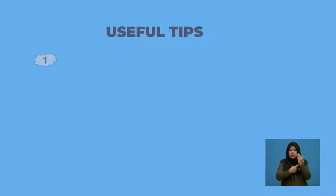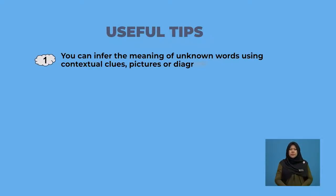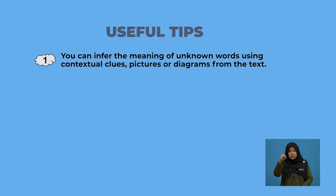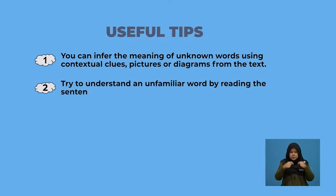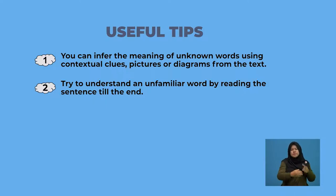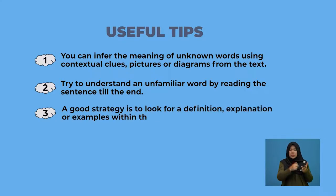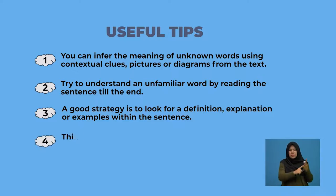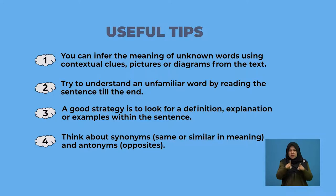Let's start with Tip 1. You can infer the meaning of unknown words using contextual clues, pictures or diagrams from the text. Tip 2: try to understand an unfamiliar word by reading the sentence till the end — it will eventually give you an idea. Tip 3: look for definition, explanation or examples within the sentence. Tip 4: think about synonyms, words that are similar in meaning, and antonyms, the opposites.